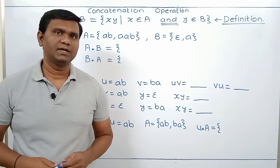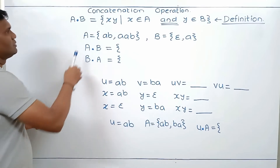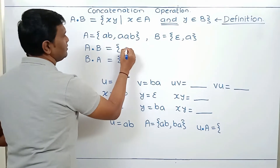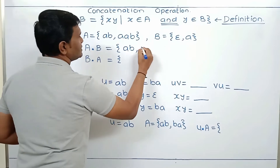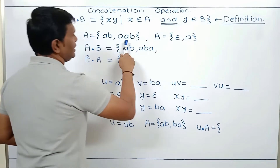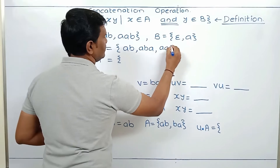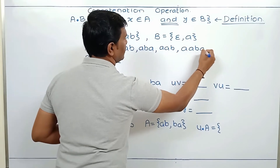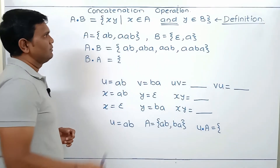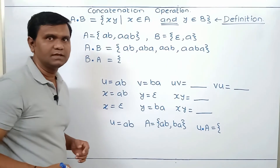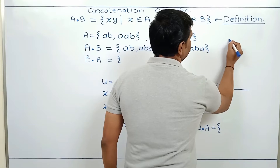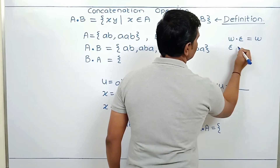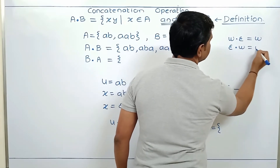Let's solve some problems for better understanding. For language A containing {AB, AAB} and language B, computing A·B: AB·ε = AB, AB·A = ABA, AAB·ε = AAB, AAB·A = AABA. Note that AB·ε gives AB itself. If you concatenate any string W with epsilon, you get W. Also, ε·W gives string W itself.